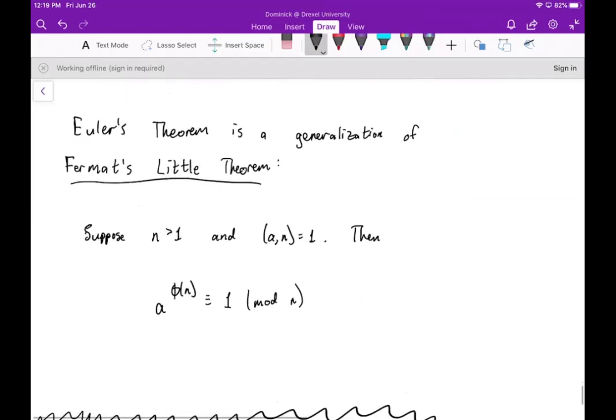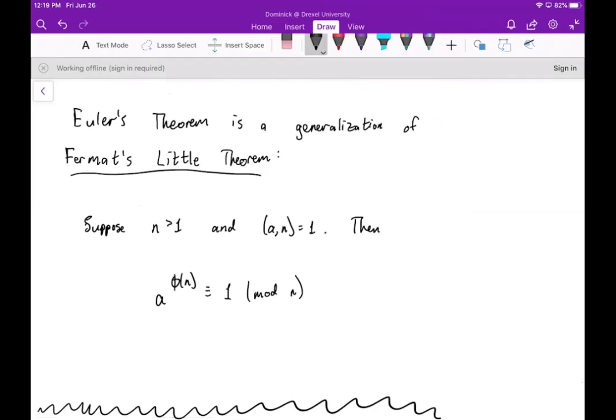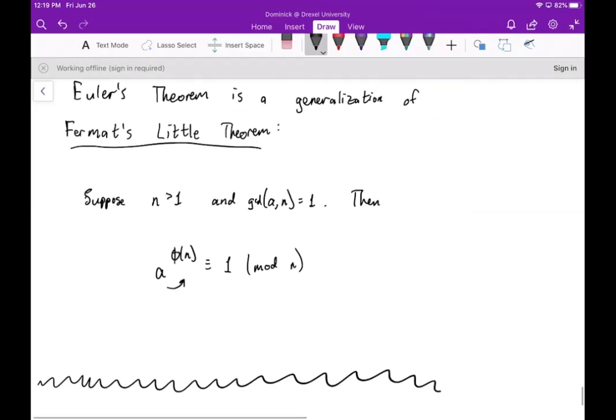Now, Euler's theorem is a generalization of Fermat's little theorem, but we won't prove it. We'll just state it. And that's that if N is greater than one, and the GCD of A and N is also equal to one, or A and N are relatively prime, then A to the phi of N is congruent to one mod N.